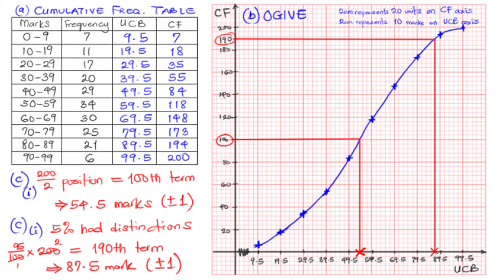We have come to the end of this question on cumulative frequency curve. We evaluated the cumulative frequency table, found the upper class boundary, computed the cumulative frequency, and plotted the Ogif graph. We used the curve to find the median mark — half of 200 is the 100th term, corresponding to 54.5 marks. We also found the least mark for distinction: the top 5% spans positions 190 to 200, giving a least mark of 87.5.